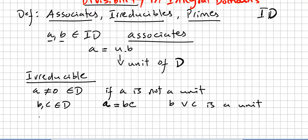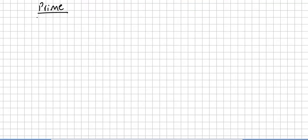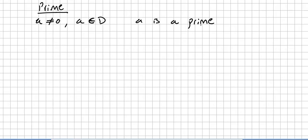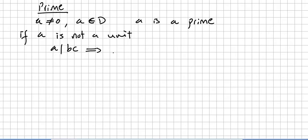I'm going to write all this, but first I'm just giving a quick idea. What about a prime? A non-zero element A is in the domain. A is a prime if A is not a unit and if A divides BC, this implies that either A divides B or A divides C. So in an integral domain, that's what prime means.